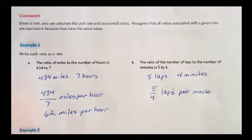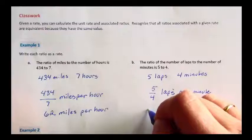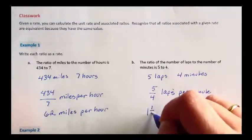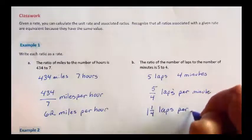5 fourths is more than 1. It's an improper fraction. And we can write this as a mixed number: 1 and 1 fourth laps per minute.